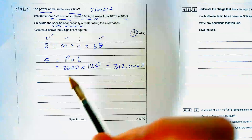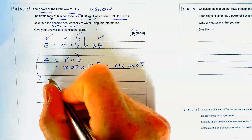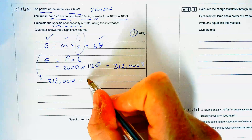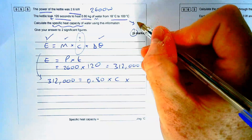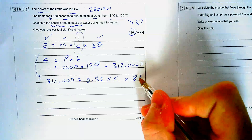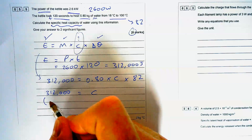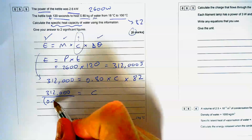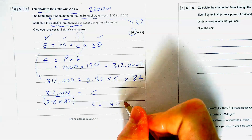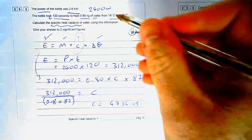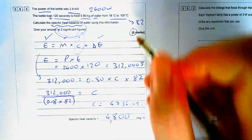Now I know the energy, I can put my values into the specific heat capacity equation: 312,000 equals mass 0.80 times by C times by the change in temperature. The temperature difference is 82 degrees. To find C, get rid of both terms on that side — using brackets: 0.8 times by 82 — put that into the calculator, and C equals 4756 etc. The question asks for two significant figures, so that becomes 4800 — a healthy six marks for this question.